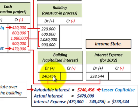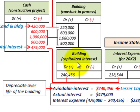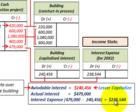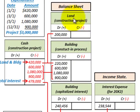The capitalized interest of $240,456 is debited to the building and will be depreciated over the life of the building. The remaining interest expense — actual interest of $479,000 less avoidable interest of $240,456 — equals $238,544, which is debited to interest expense on the income statement. On the balance sheet, we have land, the building, and the capitalized interest on the building — all of which will be depreciated over the building's useful life.